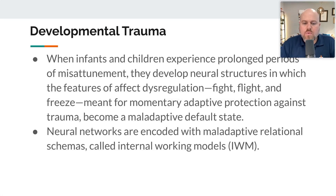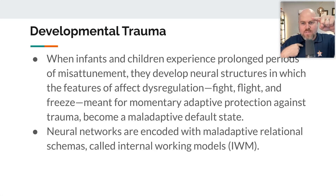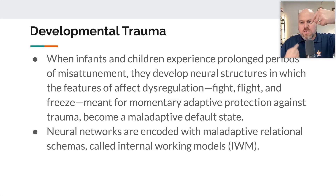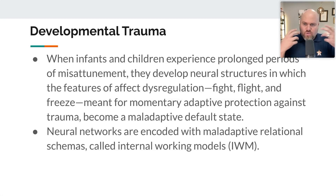What happens then is that neural networks are encoded with maladaptive relational schemas, which are called internal working models. If you've seen my webinar on attachment theory, you know what internal working models are — they're like a template in our mind of who other people are and how they treat us, who we are in the relationship, how we interact, and what that says about us. That template becomes encoded and we use it to see and interpret our current experience through that mirror.